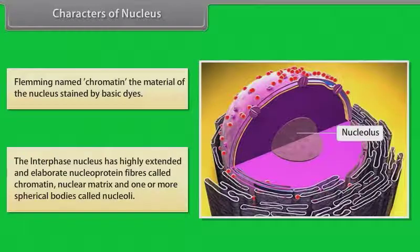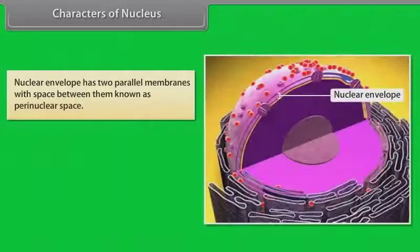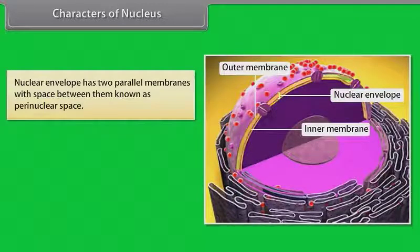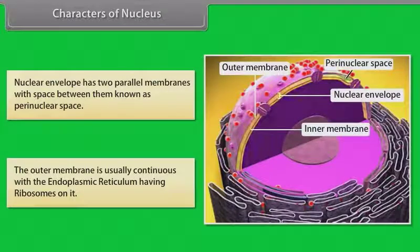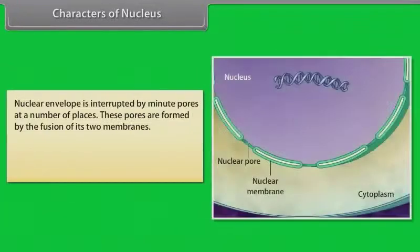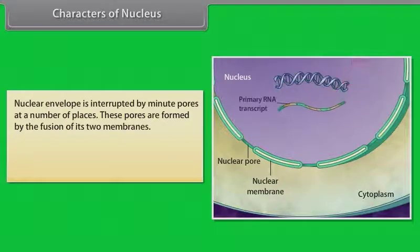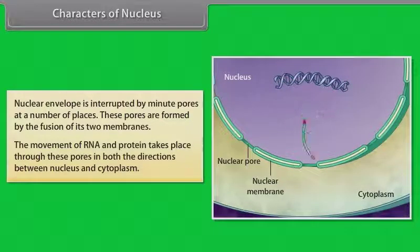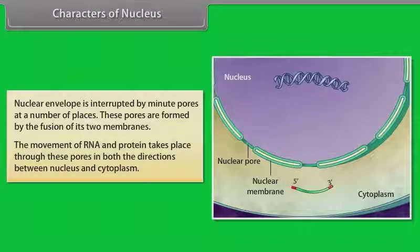The interphase nucleus has highly extended and elaborate nucleoprotein fibers called chromatin, a nuclear matrix, and one or more spherical bodies called nucleoli. The nuclear envelope has two parallel membranes with a space between them known as the perinuclear space. The outer membrane is usually continuous with the endoplasmic reticulum and has ribosomes on it. The nuclear envelope is interrupted by minute pores at a number of places, formed by the fusion of its two membranes. The movement of RNA and protein takes place through these pores in both directions between the nucleus and the cytoplasm.